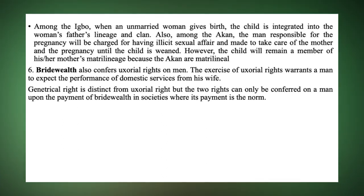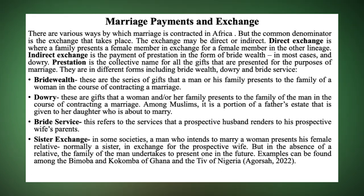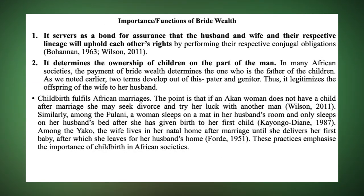So this brings us to the end of today's lecture. Today we have looked at marriage payments and exchange. We have seen that the marriage payments can be direct or indirect. We have said that prestation refers to the collective name for all the gifts that are presented during the course of a marriage contraction. It comes in three forms: the diary, the bride price, and the bride wealth. And then we moved on to look at the importance of bride wealth in Africa. Thank you very much.